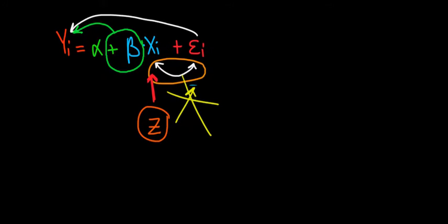The instrumental variable, which we call z, is going to affect the independent variable x, which in turn is going to affect the outcome. x is going to affect the outcome.